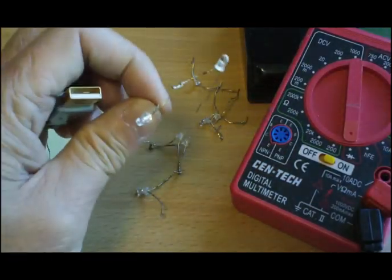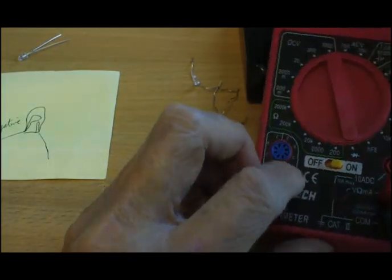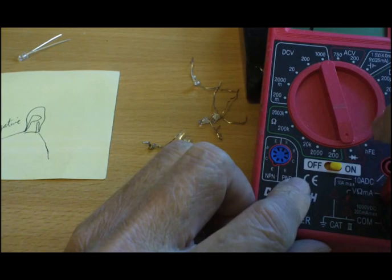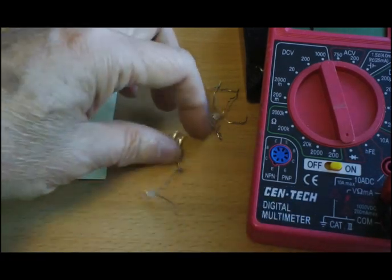But the simplest way, like I said, would be to use an inexpensive meter like this. Set it to the diode checking function, and there you have it.